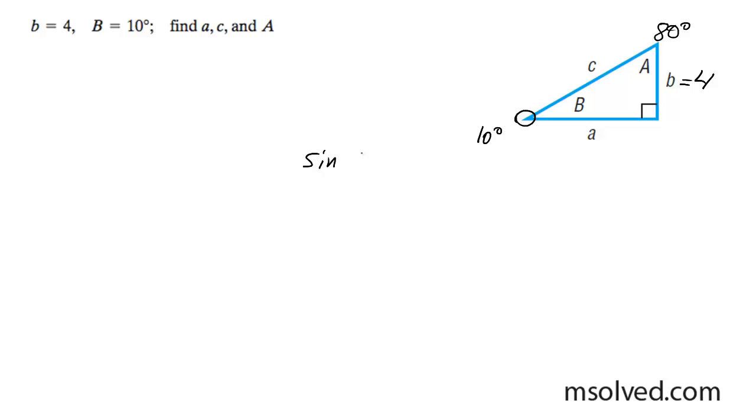So now what I'm going to do is I'm going to use the trig to find side c. So I'm going to do sine of 10 degrees opposite, which is 4 over c. So c is going to be equal to 4 divided by the sine of 10 degrees, which is going to be equal to